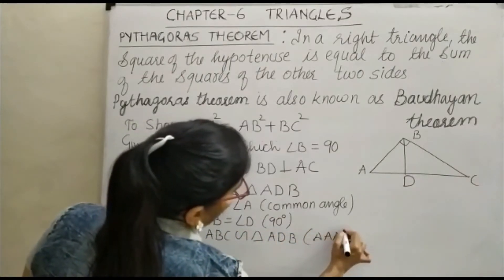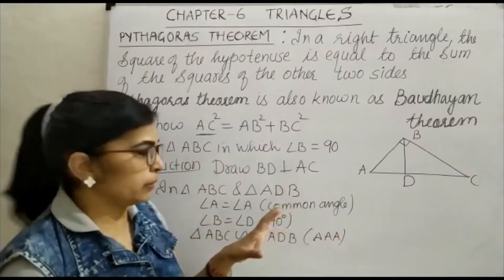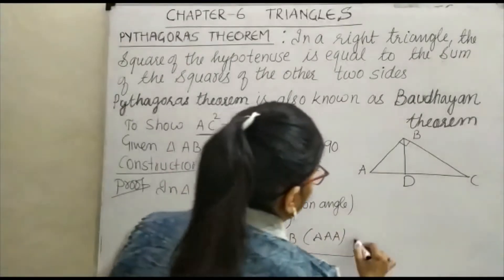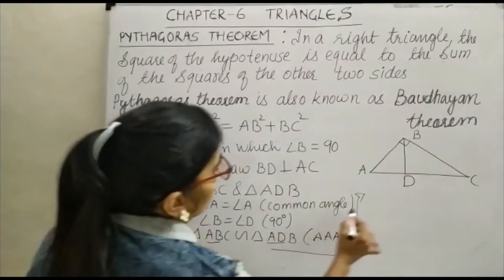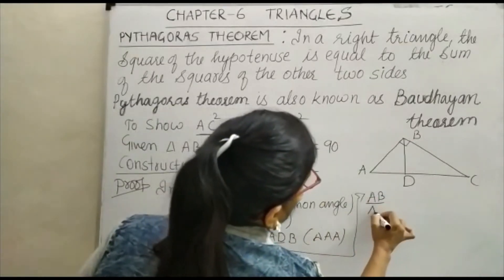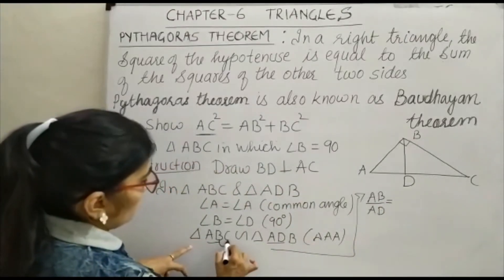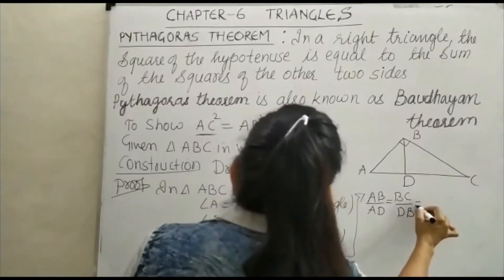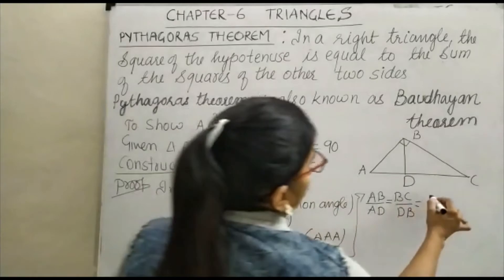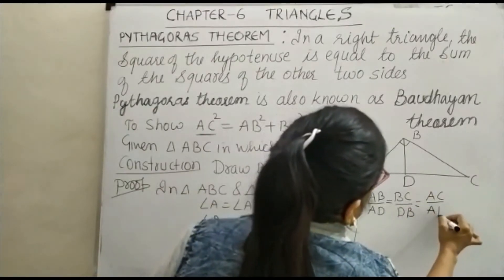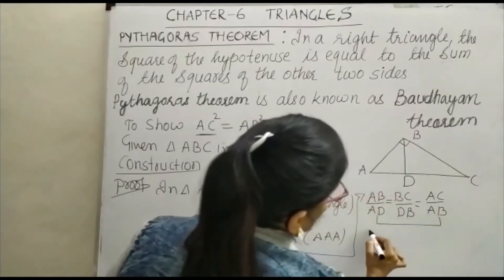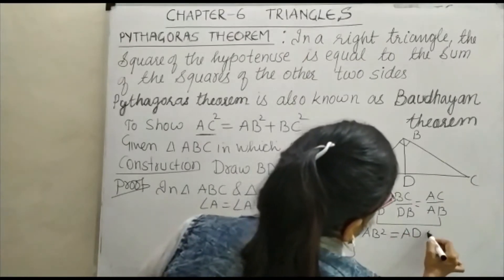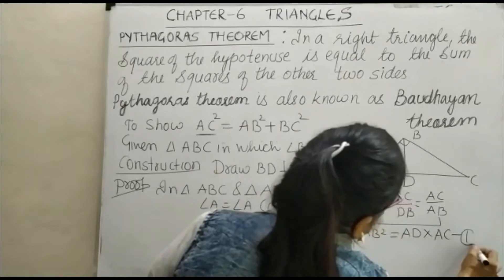By AA similarity — since two angles of two triangles are equal, the third will also be equal, and thus we can take the ratio. The ratio gives us AB upon AD is equal to AC upon AB. From these two ratios, we get AB square is equal to AD into AC. Let this be equation number 1.